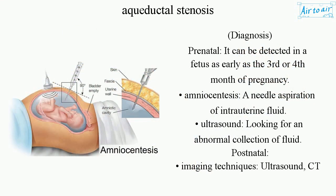Diagnosis. Prenatal: it can be detected in a fetus as early as the third or fourth month of pregnancy. Methods include amniocentesis — a needle aspiration of intrauterine fluid — and ultrasound, looking for an abnormal collection of fluid.